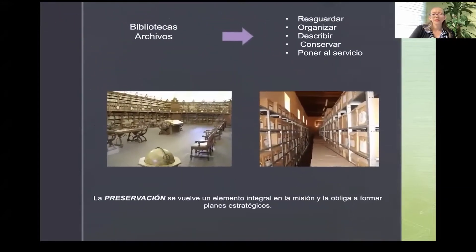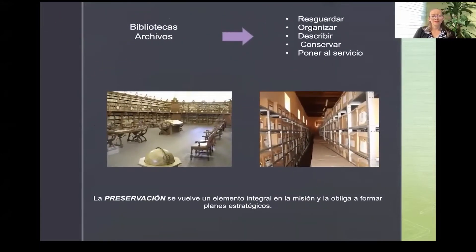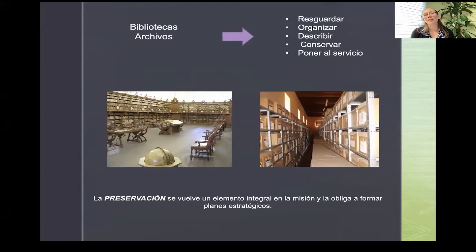Uno de los principales riesgos o problemas de los centros de información es que tienen una gran necesidad de asegurar la continuidad de los materiales documentales que poseen, debido a su valor social, histórico, documental, científico, religioso, estético e inclusive sentimental. Las bibliotecas, los archivos y los museos tienen como principal objetivo resguardar, organizar, describir, conservar y poner al servicio. No solamente es mantener la información en buenas condiciones, sino también que esté en uso, que se pueda transmitir esa información.